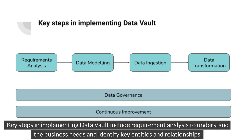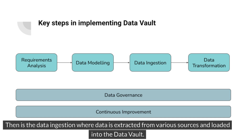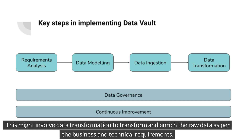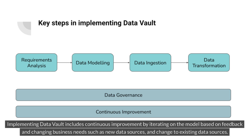Key steps in implementing Data Vault include requirement analysis to understand the business needs and identify key entities and relationships. Then is data modeling to design the hubs, links, and satellites based on the identified entities and relationships. Then is data ingestion, where data is extracted from various sources and loaded into the Data Vault. This might involve data transformation to transform and enrich the raw data as per business and technical requirements. Throughout the process, there is data governance to implement measures ensuring data quality, consistency, and compliance. Finally, continuous improvement by iterating on the model based on feedback and changing business needs, such as new or modified data sources.